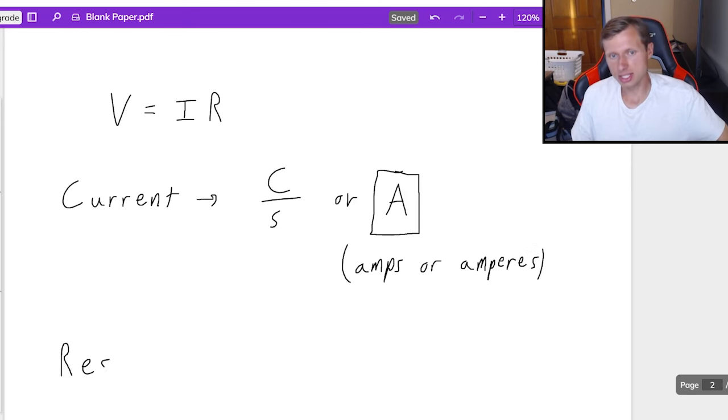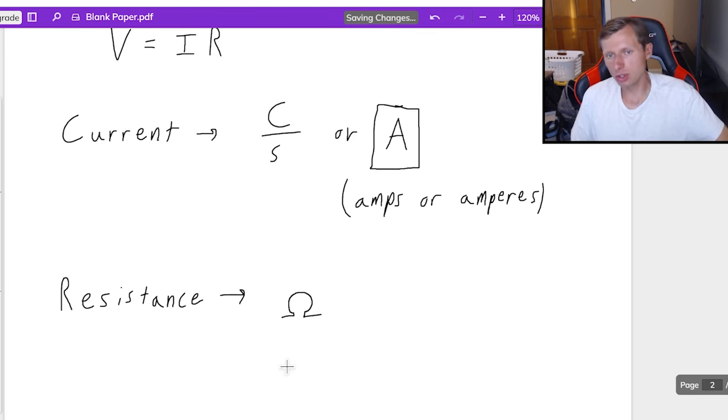And then the last one on this list is the units for resistance. Now these are some of the hardest units to draw in the class. Because the unit is the Ohm, which is symbol, capital Omega, which I'll be doing my best to draw here. Definitely takes some practice to get good at that. And remember that this is called the Ohm, lowercase o, h, m. And that's the units for resistance.